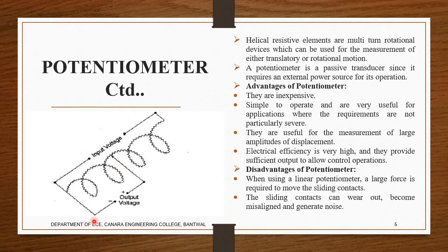These are called helipots because the pots are in a helical shape. They are usually inexpensive and simple to operate via the sliding contact. They can be used for measurement of large amplitudes or displacements. Their efficiency is very high and they provide sufficient output to allow control operations — for example, controlling voltage level in oscillator circuits for stability.